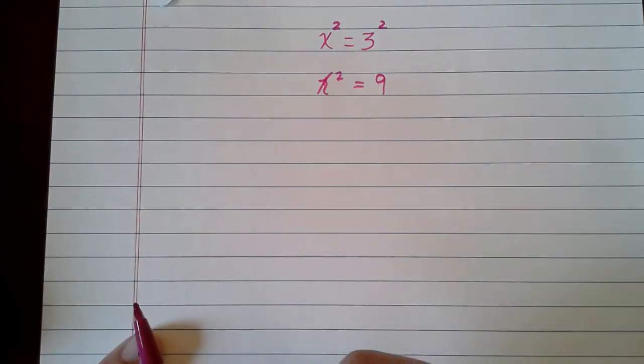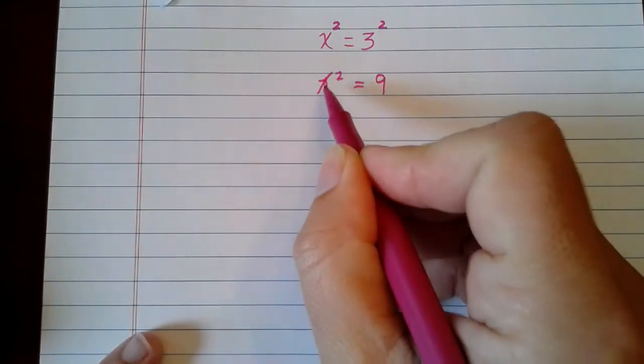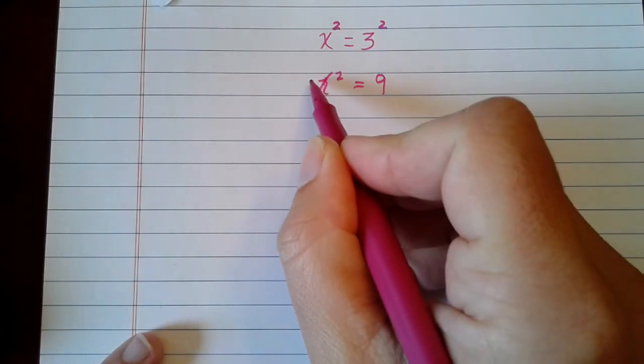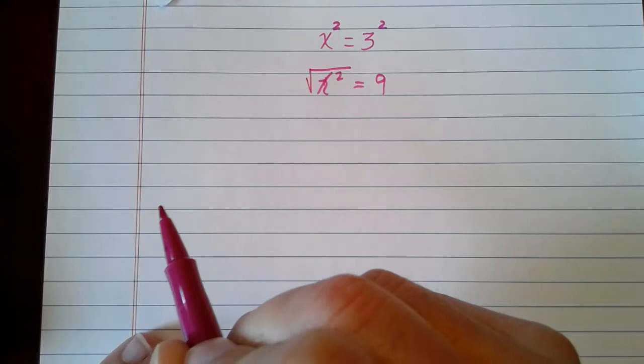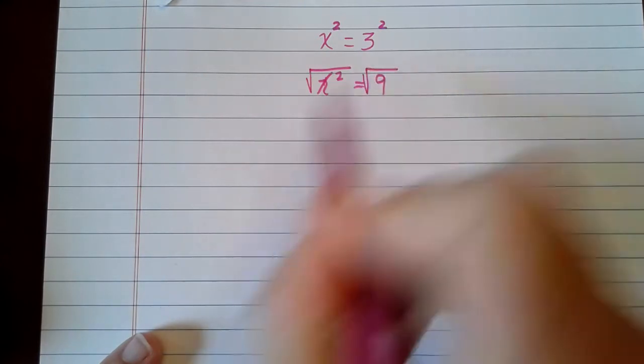All right, now what I'm going to do is I'm going to solve for x. Since x is being squared, I need to do the square root of that. So I need to take the square root of the other side.